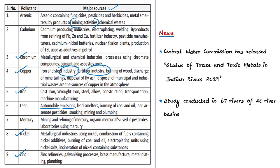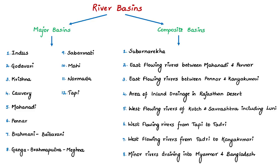The CWC has released the 'Status of Trace and Toxic Metals in Indian Rivers 2019' — its third such edition. The study was conducted across 67 rivers in 20 river basins, comprising 12 major basins and 8 composite river basins. Major basins include the Indus, Ganga, Brahmaputra, Meghna, Godavari, Krishna, Kaveri, Mahanadi, Pennar, Brahmani-Baitarani, Sabarmati, Mahi, Narmada, and Tapi basins, each with a drainage area exceeding 20,000 sq km.